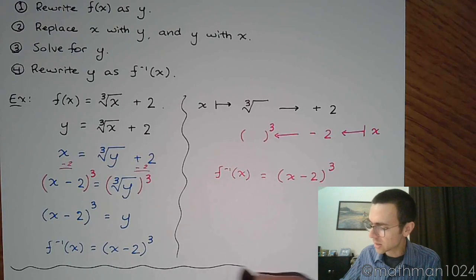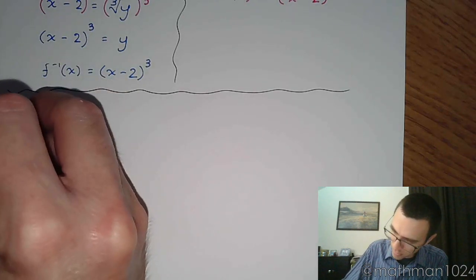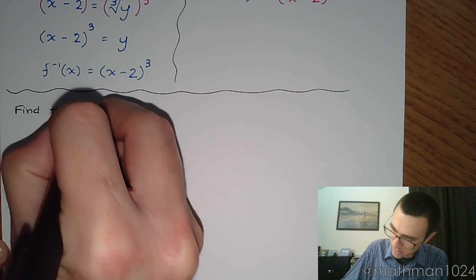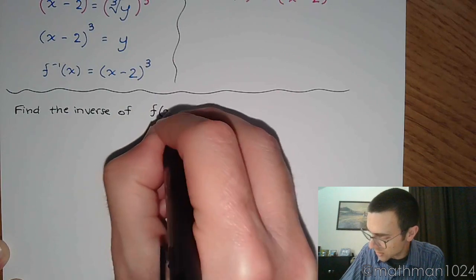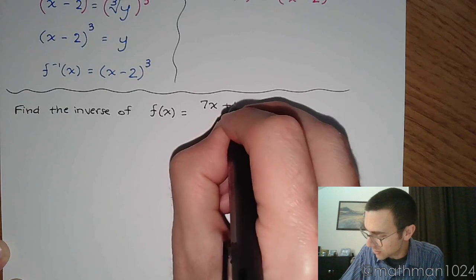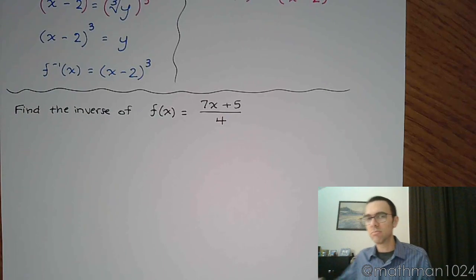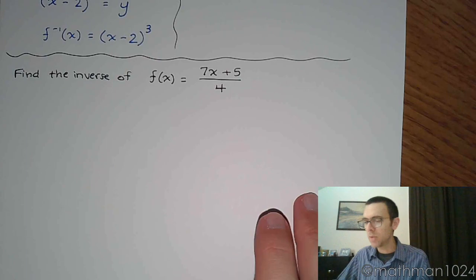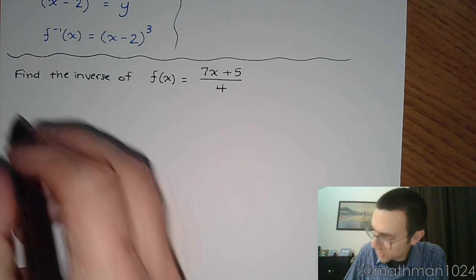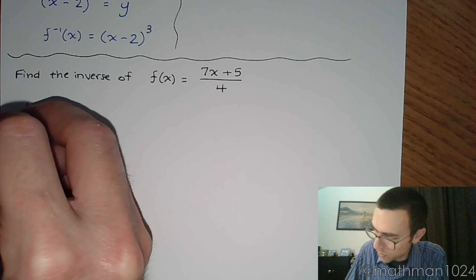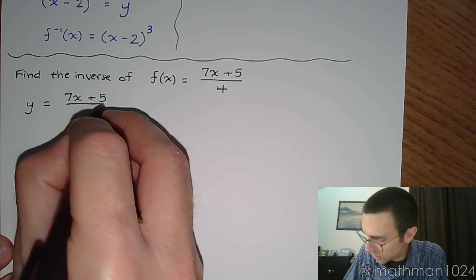So let's take a look at this next example. So find the inverse of f of x is equal to 7x plus 5 divided by 4. Now we're going to do it the easy way, and we're going to do it the other easy way. So the first way that we're going to do this is with the steps that we have written at the top of this page.